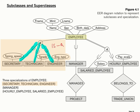These pitchforks do not go directly to the superclass employee, but rather they go to a circle with a D in it. The D stands for disjoint, which means the subclasses cannot overlap — they have to be separate from one another. For example, you could be a secretary or a technician, but you could not be both. You could not be a secretary by day and a technician by night.